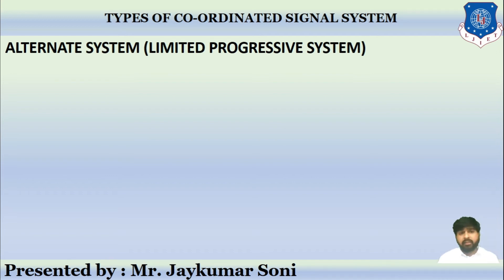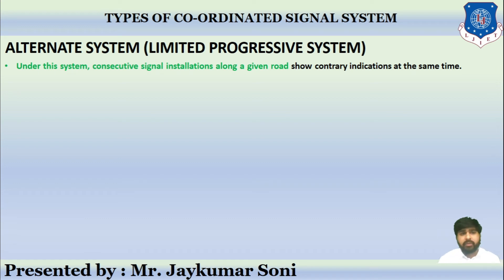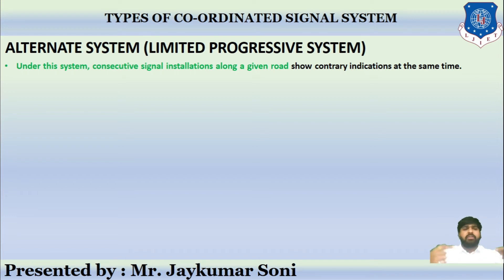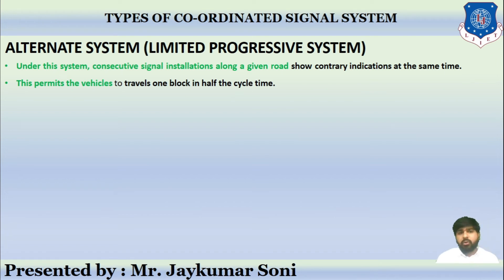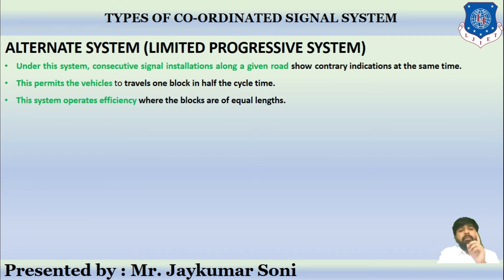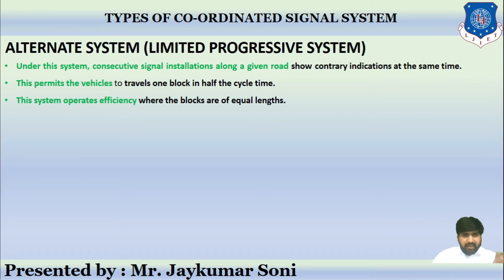The alternate system is also called the limited progressive system. Under this system, consecutive signal installations along a given road show contrary indications — if one signal is red, the adjacent one is green. This permits vehicles to travel one block in half the cycle time. This system operates efficiently where the blocks are of equal length.